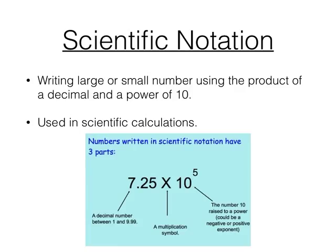Scientific notation means writing large or small numbers using the product of a decimal and a power of 10. We use these in scientific calculations. Numbers written in scientific notation have three parts: a decimal number between 1 and 9.99 — like 7.25 in 7.25 times 10 to the 5th — a multiplication symbol (usually an X), and the number 10 raised to some power, which could be positive or negative.